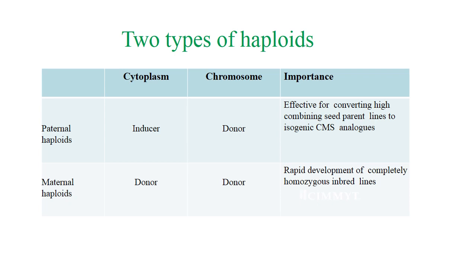Coming to two types of haploid. This is a classification based on the origin of the parent — either paternal or maternal. In the case of paternal, it is called the inducer, effective for converting high-combining seed parent lines to isogenic CMS analogues. In maternal haploid, that is the cytoplasmic donor, there is rapid development of completely homozygous inbred lines.